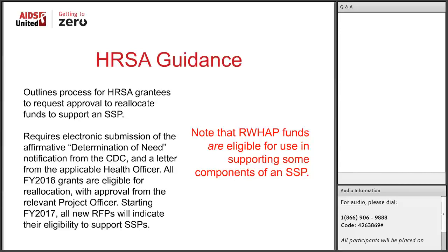Ryan White funding has been identified in a FAQ released alongside HRSA's guidance as eligible for use in funding SSP programs. Examples of what Ryan White funds could go towards include outreach, linkage and referral services, medical and non-medical case management, substance abuse services, mental health services, and services connected to early intervention programs. HRSA also mentions that Ryan White grantees may consider stationing staff in an SSP to serve as a bridge between a community-based organization and a federally qualified health center or AIDS service organization.